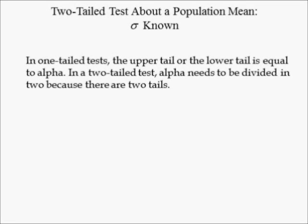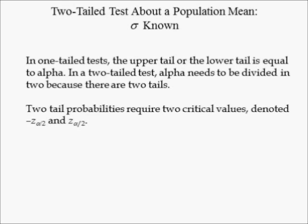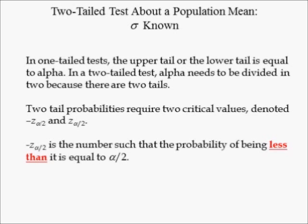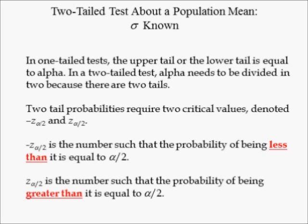In a one-tailed test, the upper tail or lower tail is equal to significance level alpha. In a two-tailed test, alpha needs to be divided in two because there are two tails. Two-tailed probabilities require two critical values, denoted negative z subscript alpha divided by 2 and z subscript alpha divided by 2. Negative z subscript alpha/2 is the number such that the probability of being less than it equals alpha/2. Z subscript alpha/2 is the number such that the probability of being greater than it equals alpha/2.